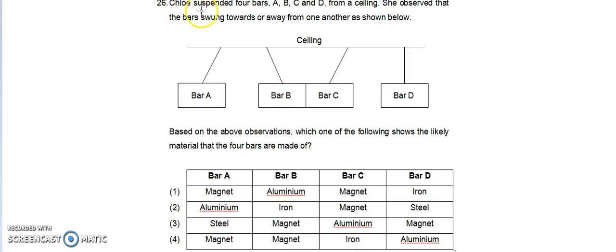Question 26. Chloe suspended four bars A, B, C and D from a ceiling. She observed that the bars swung towards or away from one another as shown below. Based on the above observations, which one of the following shows the likely material that the four bars are made of?